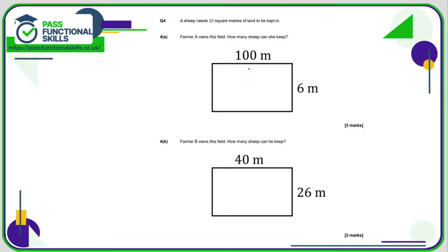So farmer A owns a field which is 100 by 6, so that is an area of 600 meters squared. And we've been told that one sheep needs 25 square meters. So how many 25s go into 600? So 600 divided by 25 is 24, so farmer A can keep 24 sheep.